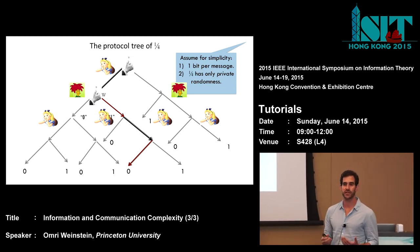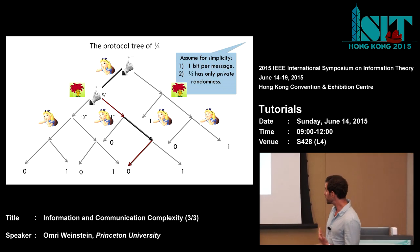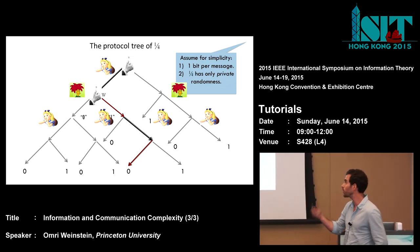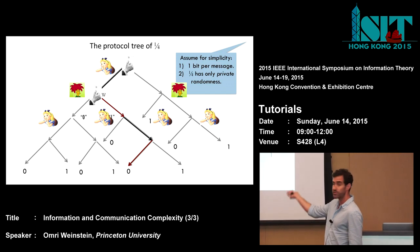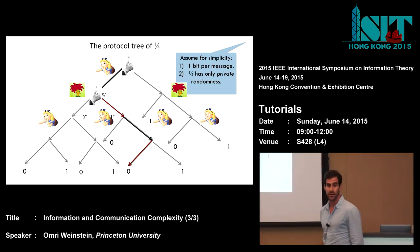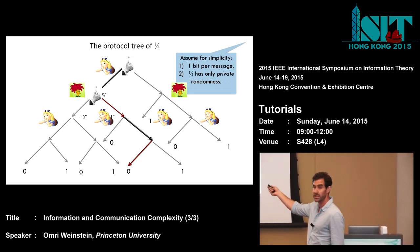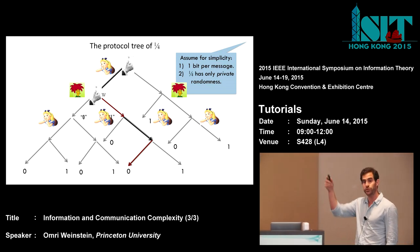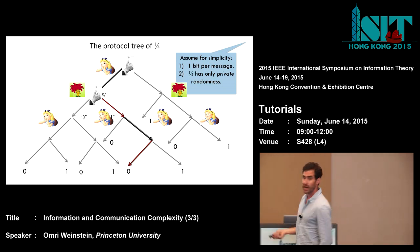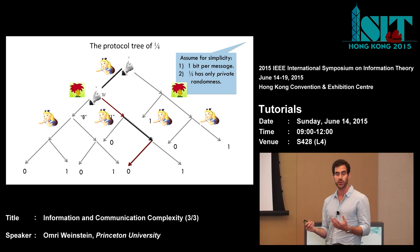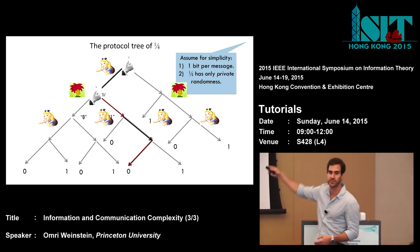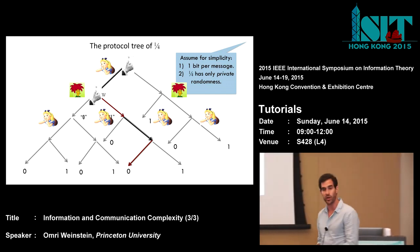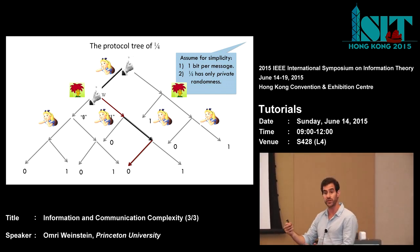In this terminology, the interactive compression task amounts to: the players simply want to sample a correctly distributed path in this tree. Alice will toss a coin, send her first message, then Bob will choose, say, the right child, then Alice will speak again, and so forth — and they will sample a leaf, which is just a root-to-leaf transcript. The interactive compression task is to sample such a leaf using the minimum communication possible. The trivial way is to just follow the path; the depth of this tree is C, the longest path is C bits of communication, and we want to do this much more efficiently.